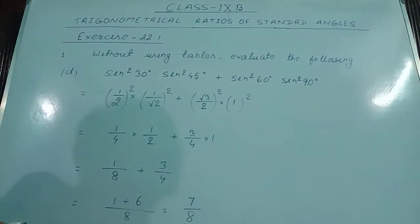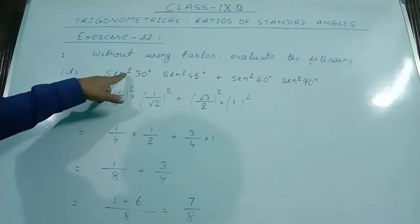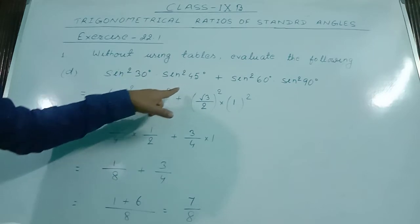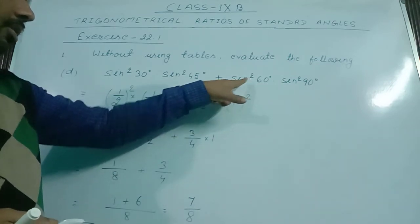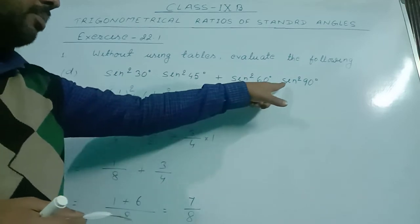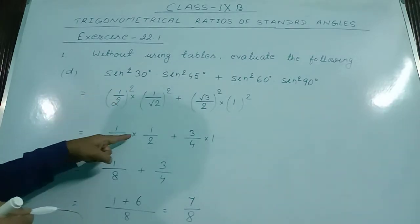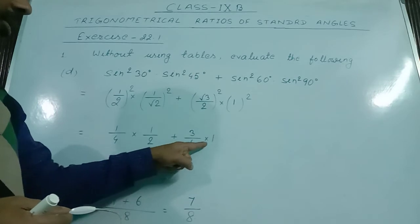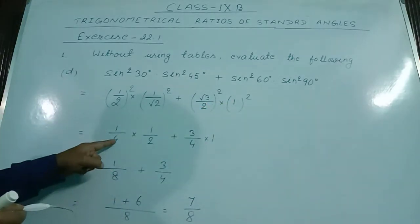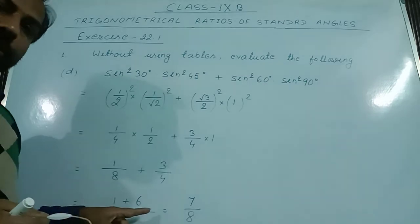Question 1b: sin²30° × sin²45° + sin²60° × sin²90°. Substituting: (1/2)² × (1/√2)² + (√3/2)² × (1)². Calculating: (1/4)(1/2) + (3/4)(1) = 1/8 + 3/4. Taking LCM as 8: 1/8 + 6/8 = 7/8. The answer is 7/8.